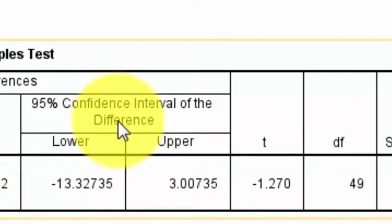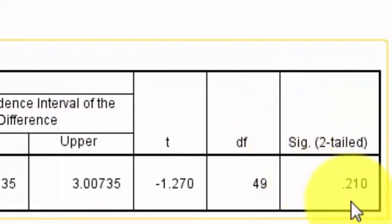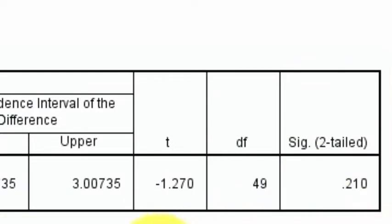I'm sorry, that's what the null states. There is no significant difference between the means. So this should come as no surprise. The sig value is not less than 0.05. Therefore, there is no significant difference between those means.